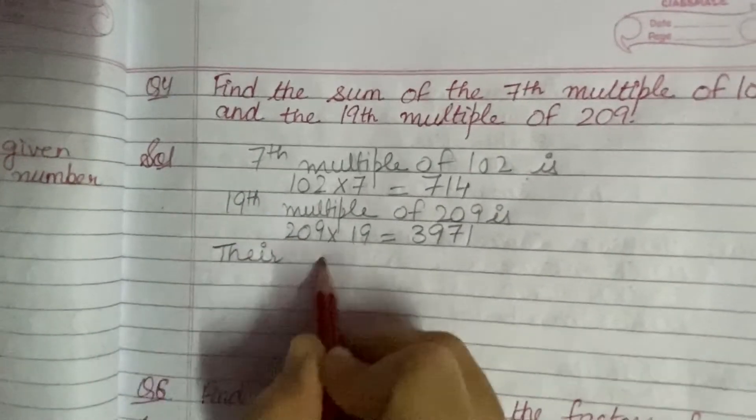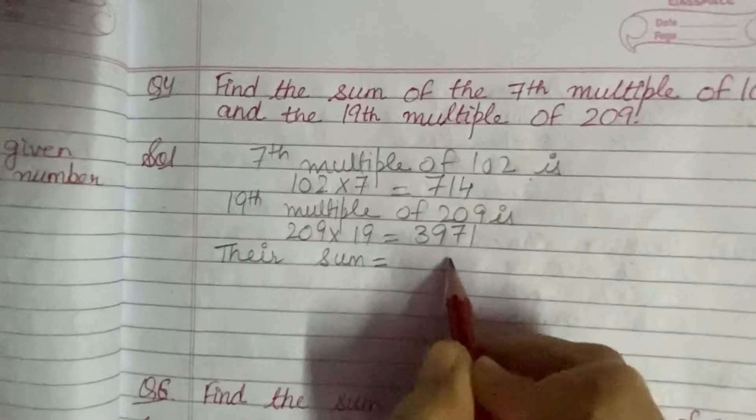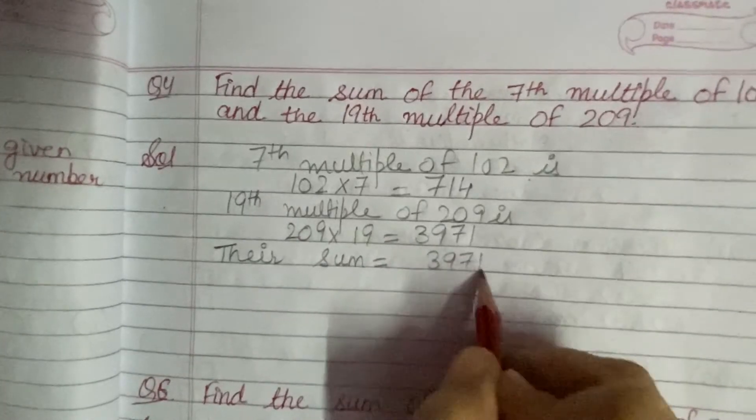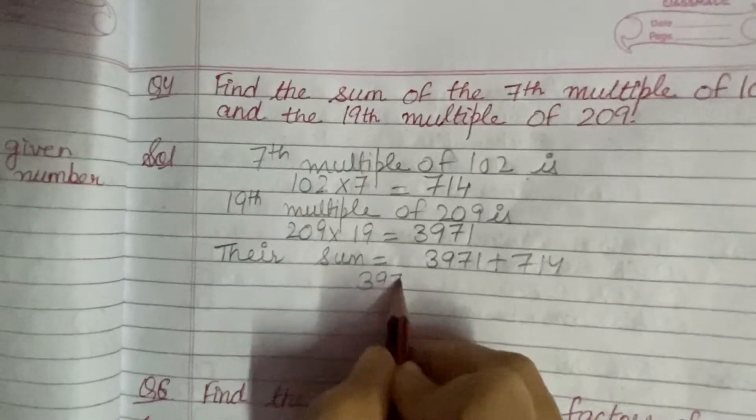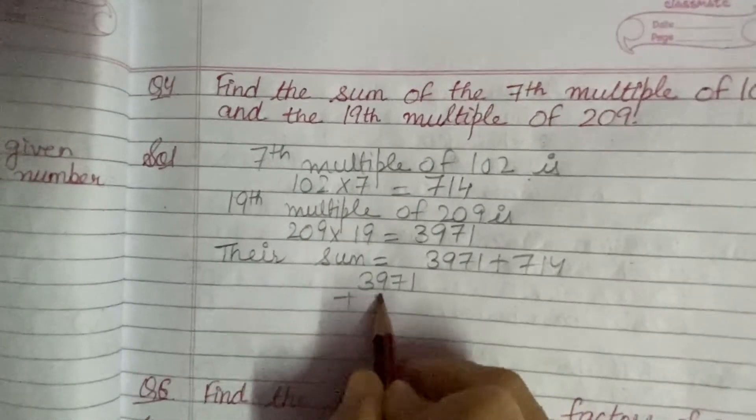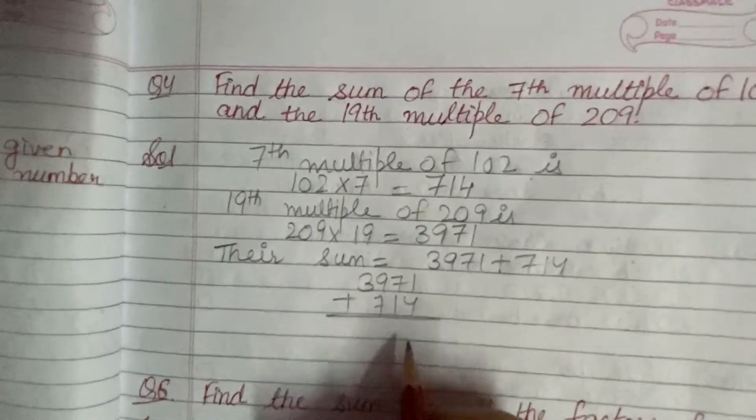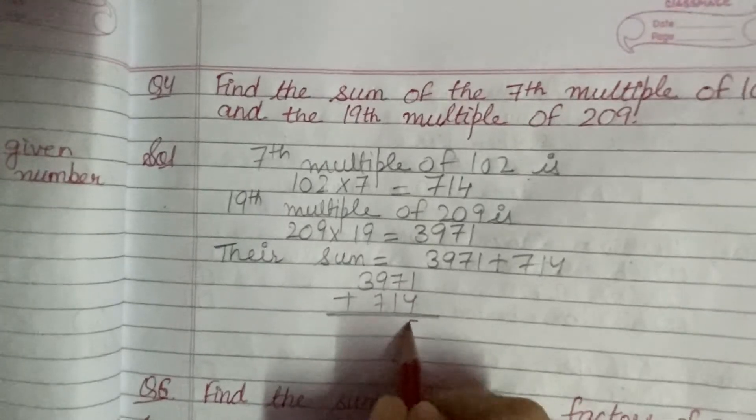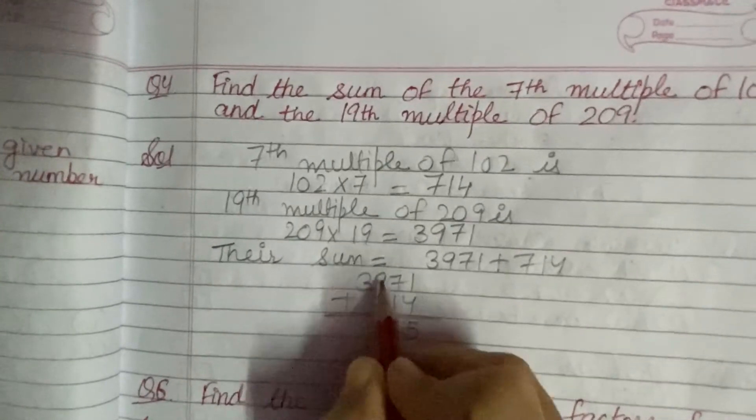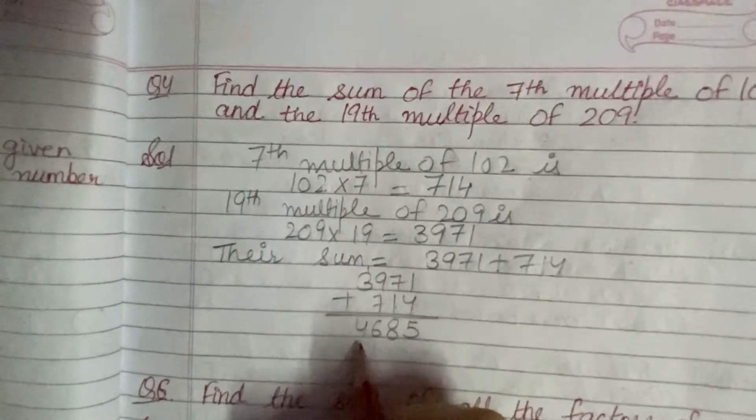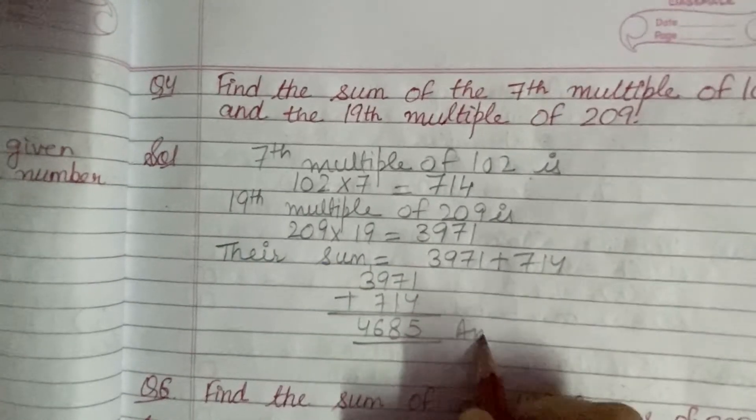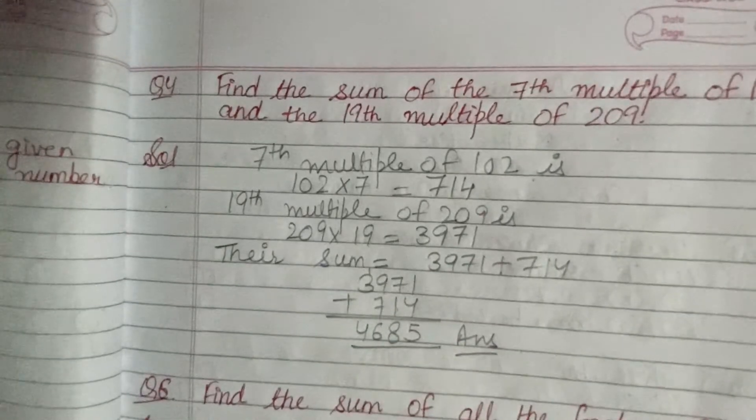That means you have to find their sum: 3971 and 714. Now add them. On adding, 1 plus 4 is 5, 7 plus 1 is 8, 9 plus 7 is 16. Write 6, carry 1. 1 plus 3 is 4. So 4685 is our answer.